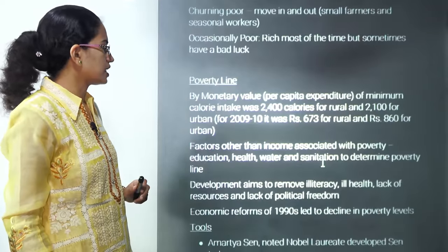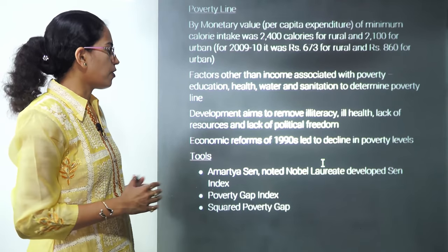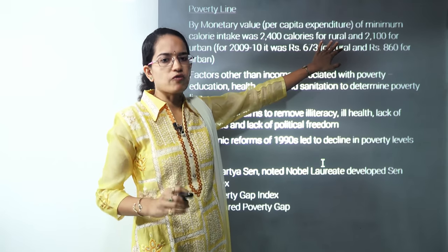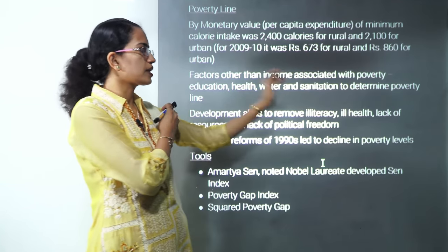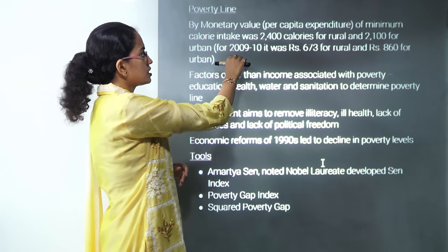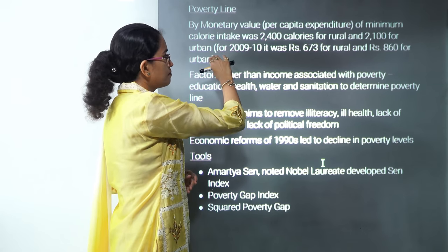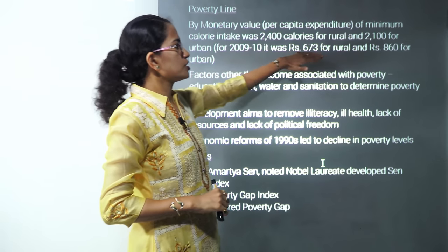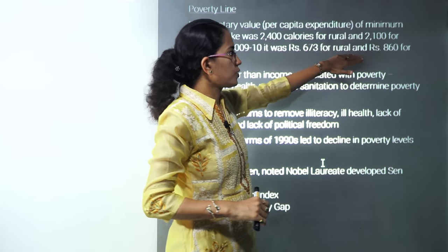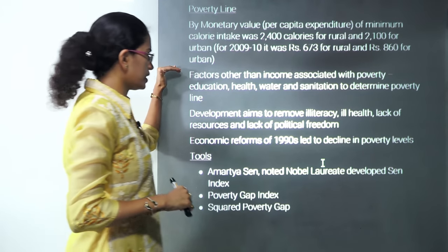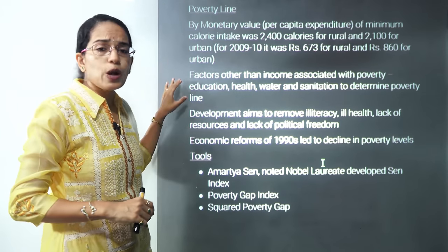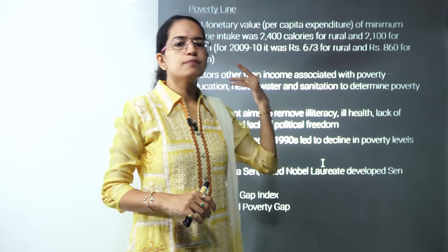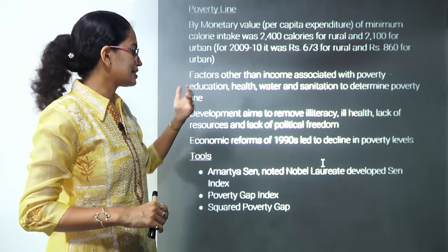The most standard classification of poverty line shifted from calorific consumption to monetary value or per capita expenditure. For 2009-10, it was rupees 673 for rural and rupees 860 for urban areas. Other factors associated with poverty include health, education, sanitation, and water supplies.